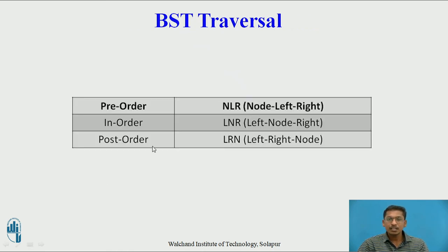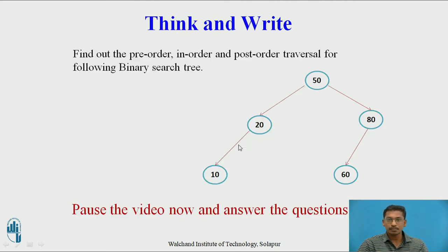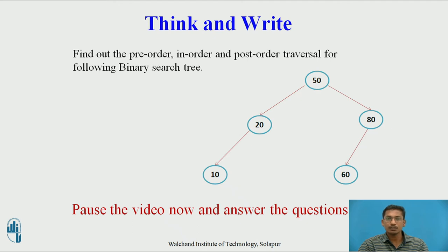This is a summary: in pre-order it is node-left-right; in in-order it is left-node-right; in post-order it is left-right-node. You can pause the video and find the pre-order, in-order, and post-order traversal for the following binary search tree.